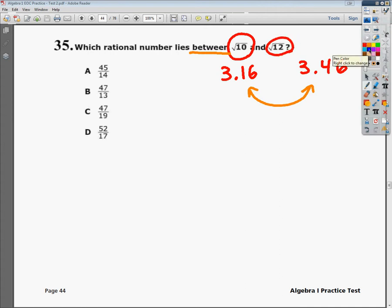Well, do the same exact thing that we just did. Plug in these answer choices into your calculator. So when you plug in 45 divided by 14, you're going to end up getting $3.21.